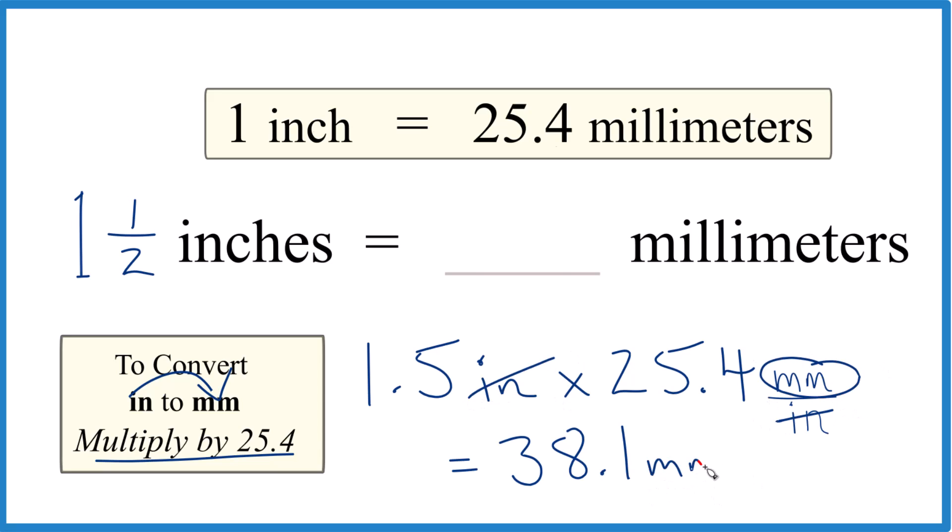That's what we're looking for. So we know we did it correctly. In answer to our question, one and one half inches or 1.5 inches, that's 38.1 millimeters.